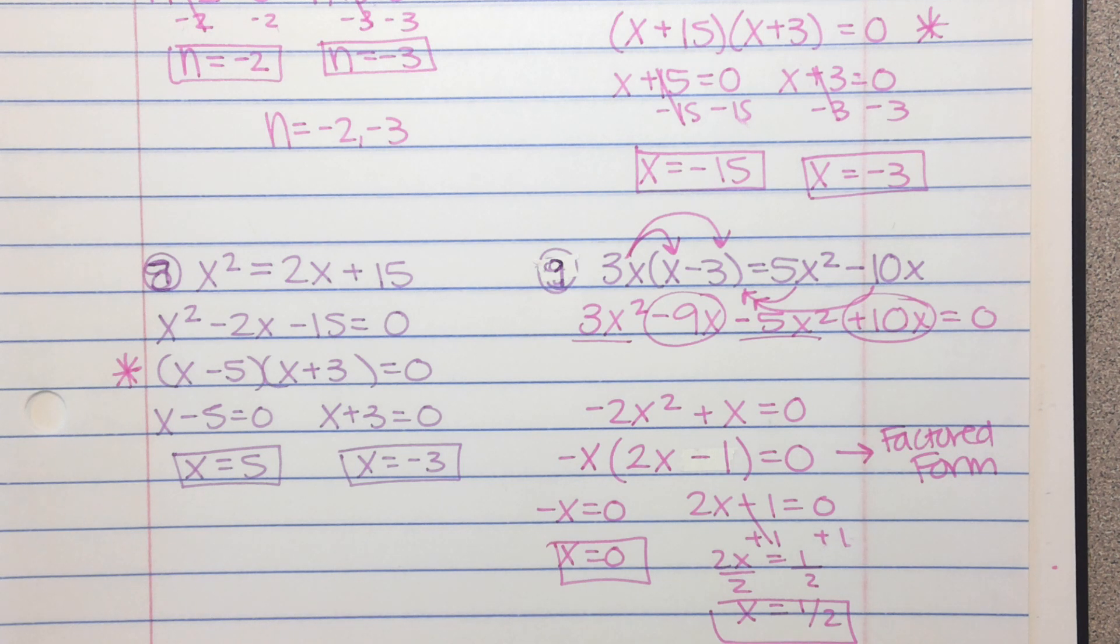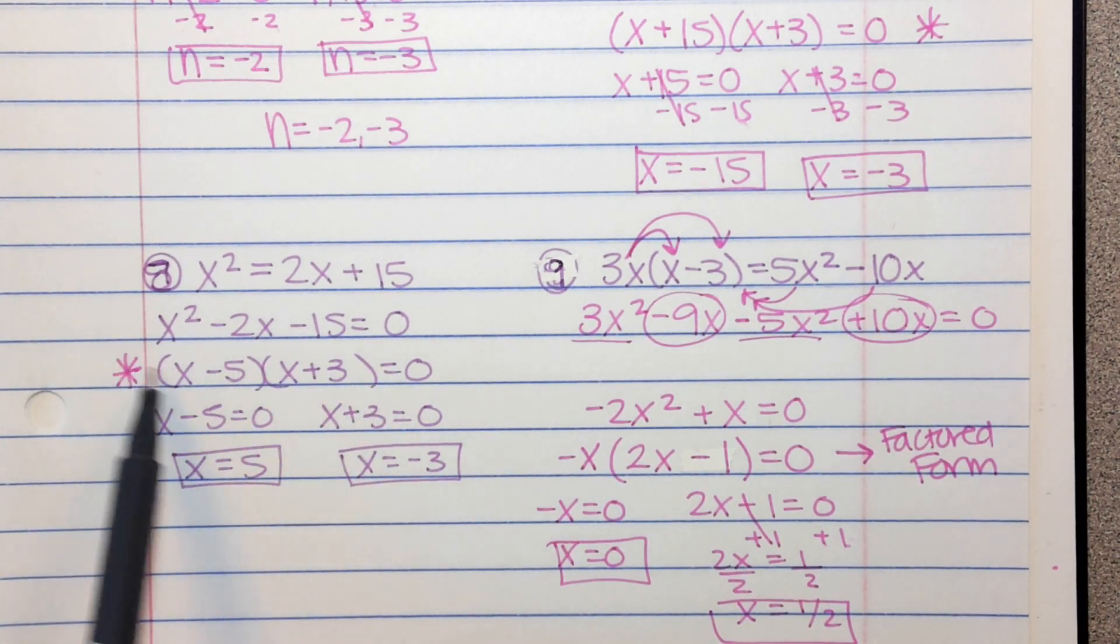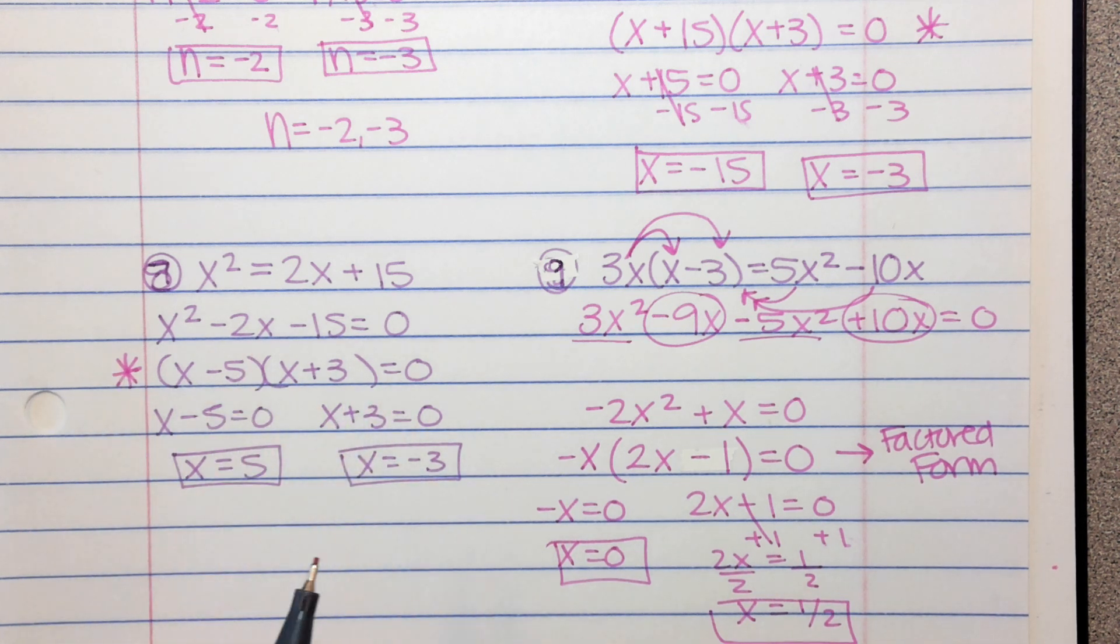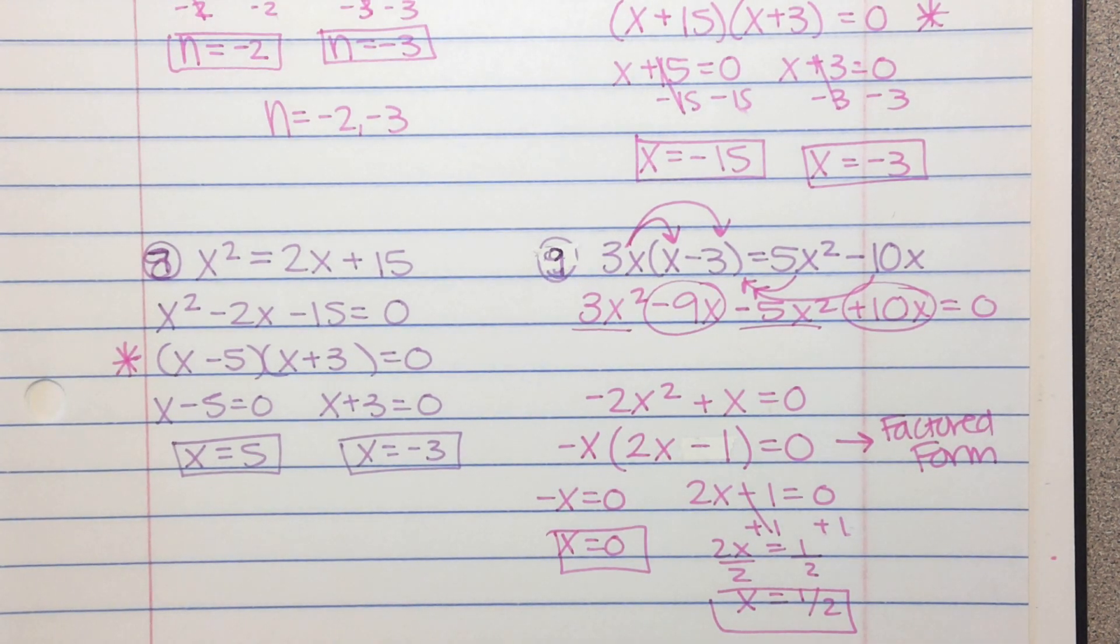So pay attention to what Math Excel is asking you if it wants the factored form. If it gives you the equal 0, it's wanting the set in parentheses. But if it's asking for the solutions or it's telling you to solve, then it's wanting your two numerical answers.